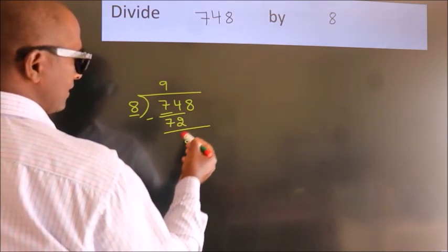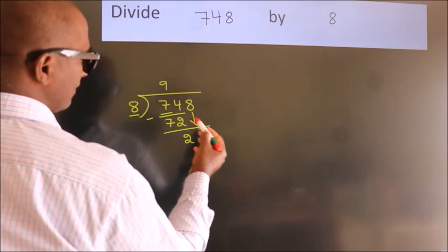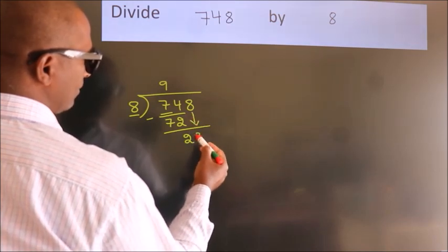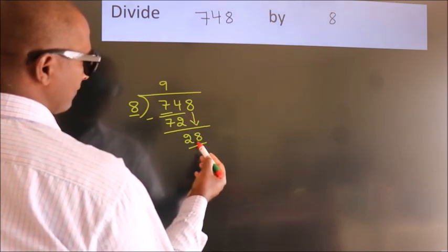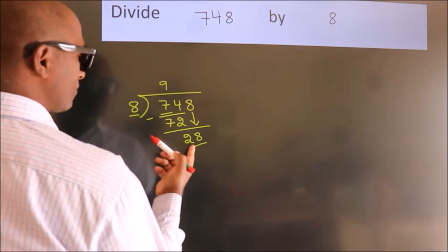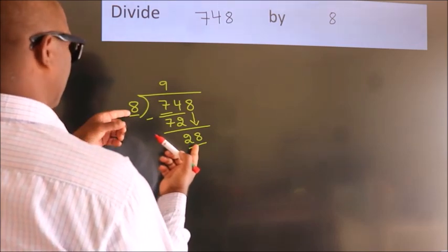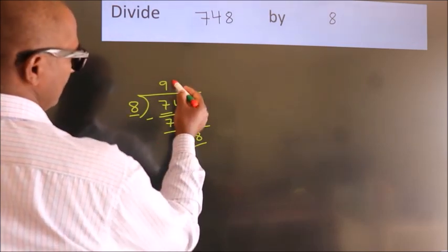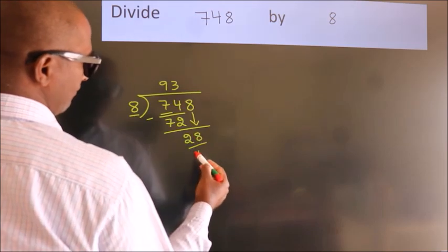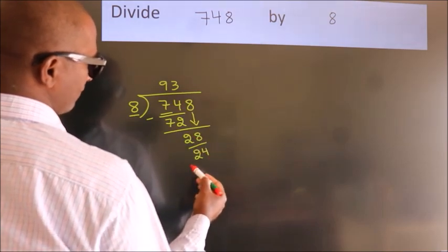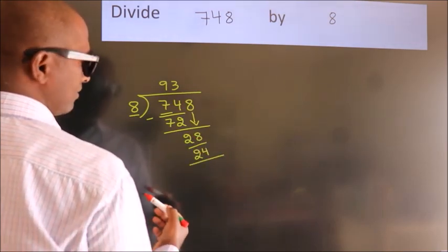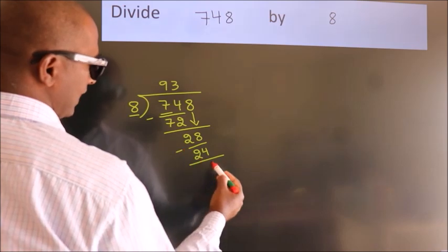After this, bring down the beside number. Bring 8 down, so 28. A number close to 28 in the 8 table is 8 threes, 24. Now, we subtract. We get 4.